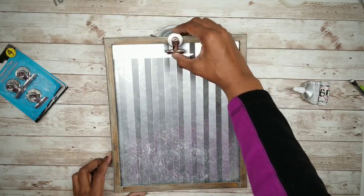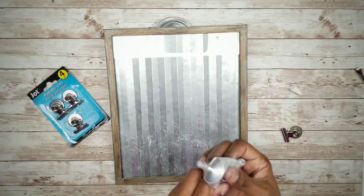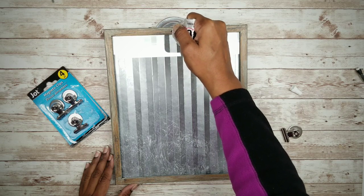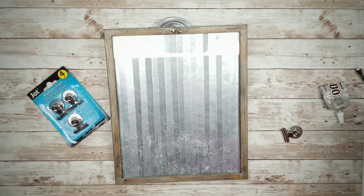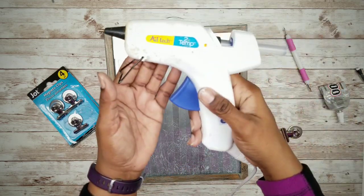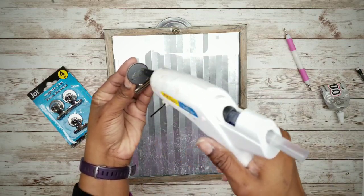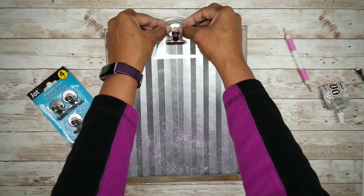Now to apply it I'll just simply be using some e6000 and then I'm going to put just a dab of hot glue on there for an instant grab. And then we're just going to go ahead and press and hold that into place while the glue bonds.